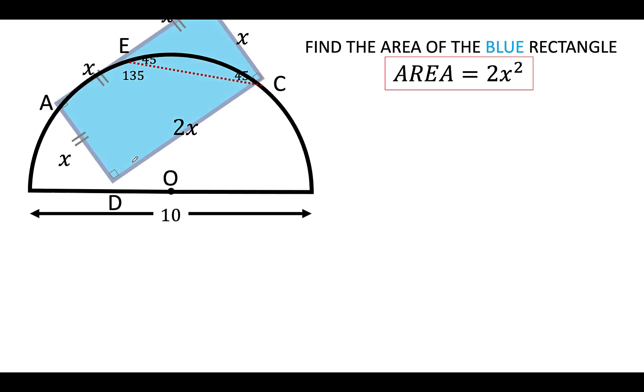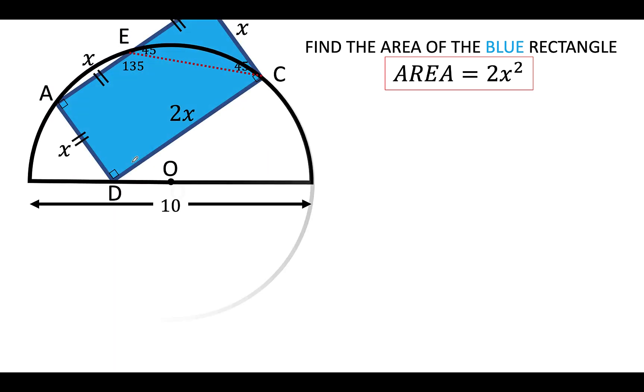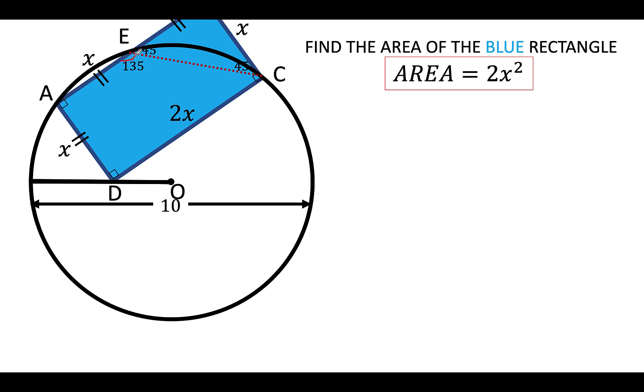Now, let's complete the circle so we can apply some properties of a circle. Remember that angle AEC is 135 degrees. Now, let's connect the center O to points A and C. OA and OC are both radii of the same circle and they are equal. If the diameter is 10 units, then the radius is 5 units.